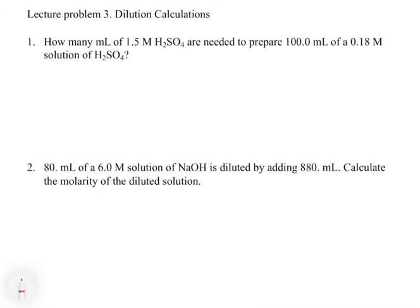Lecture problem three gives us some examples of dilution calculations. It says, how many mils of a 1.5 molar sulfuric acid solution are needed to prepare 100 mils of a 0.18 molar solution of H2SO4? We're taking a concentrated solution and preparing a secondary solution by adding water to make a more dilute solution with a total volume of 100 mils.